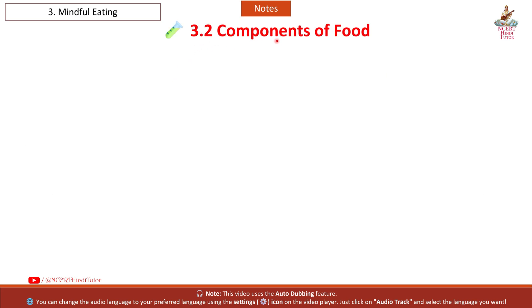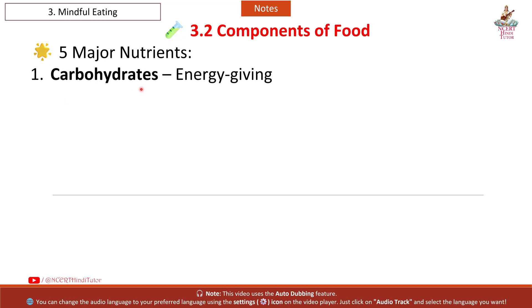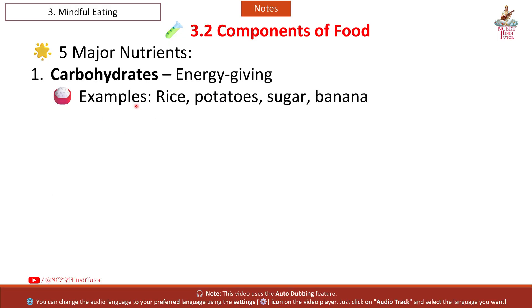Section 3.2: Components of Food. There are 5 major nutrients. First: Carbohydrates – energy giving. Examples: rice, potatoes, sugar, banana.